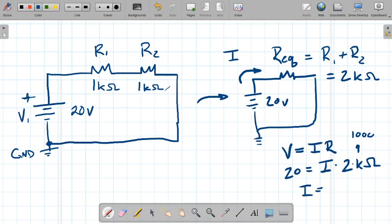So my current in this case is going to be, if I divide both sides by 2k, it's going to be 20 divided by 2k, or two thousand. Zeroes cancel out, twos cancel out, so I've got one over 100, otherwise known as 0.01 amps.